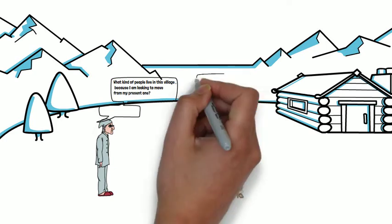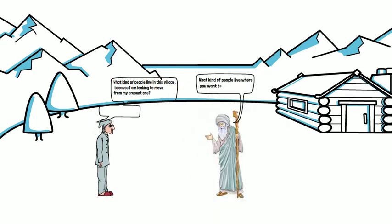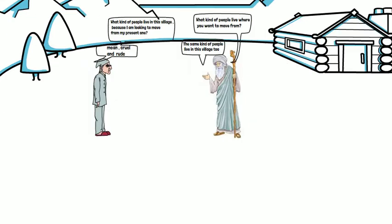The wise man asked, What kind of people live where you want to move from? The man said, They are mean, cruel and rude. The wise man replied, The same kind of people live in this village too.